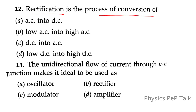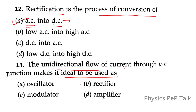Rectification is the process of conversion: rectification is the conversion of bidirectional current into unidirectional current. AC is called bidirectional current and DC is called unidirectional current, so rectification converts AC to DC. The device used to achieve this is called a rectifier. Option A is the correct answer. The unidirectional flow of current through a P-N junction makes it suitable to be used as a rectifier.